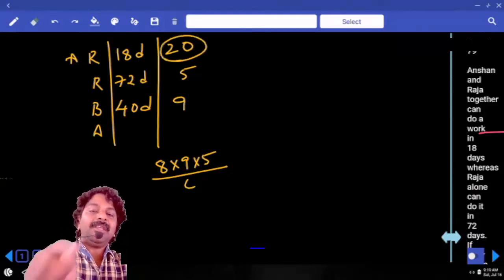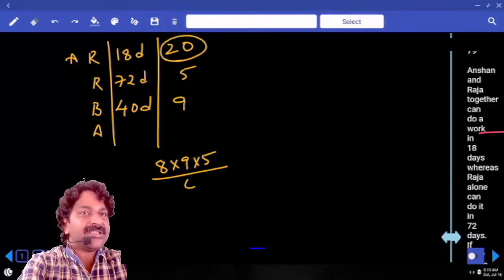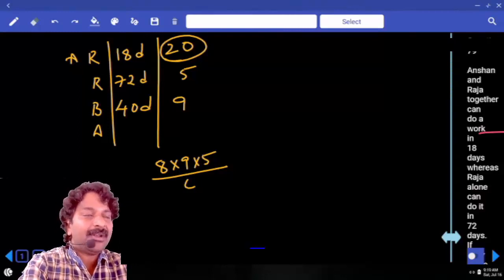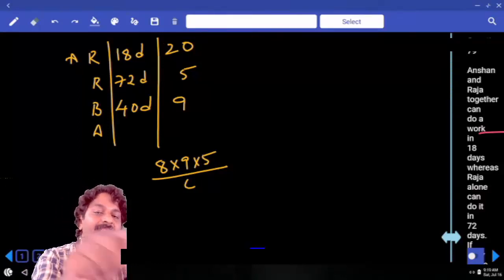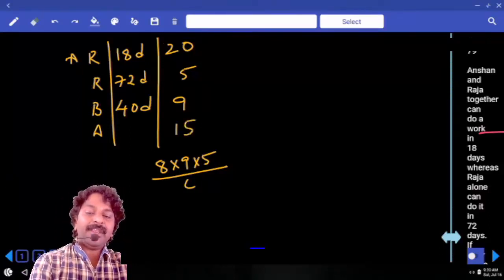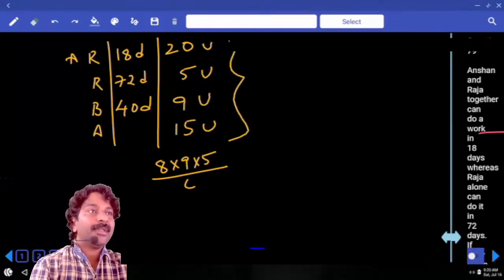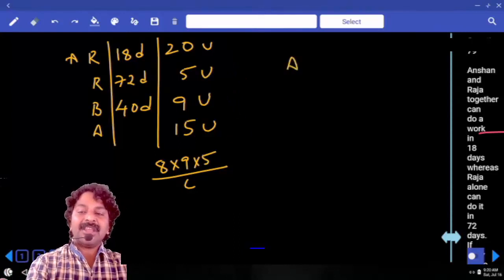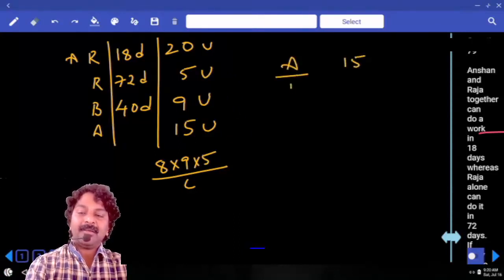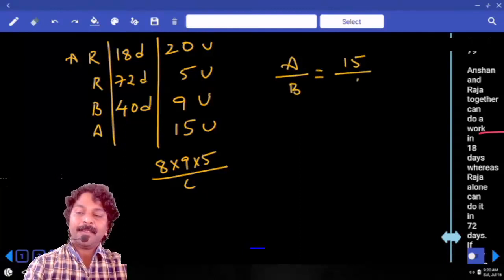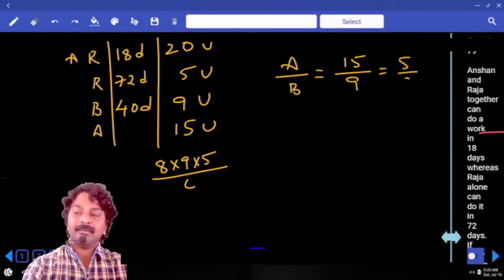Now, 20 units is work done by Anshan and Raja both together, whereas Raja alone can complete 5 units, then Anshan can do 15 units. What are these values related to? Efficiency. Anshan efficiency, 15. Bevy efficiency, ratio, 5.